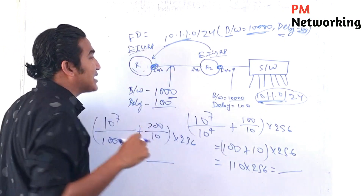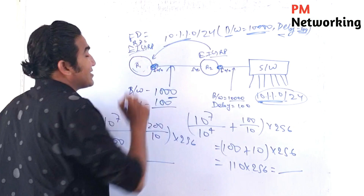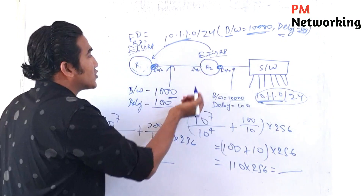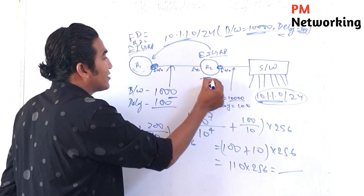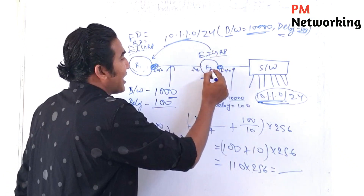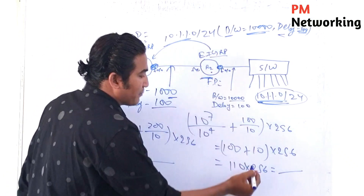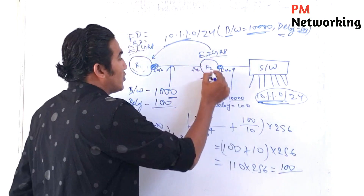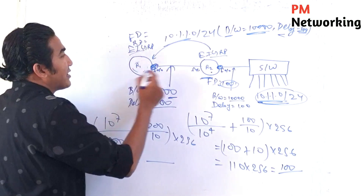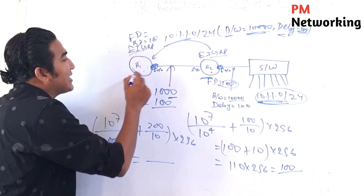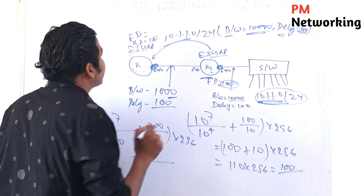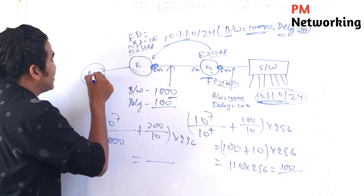What is RD for R1? RD is the distance from my neighbor to the destination. R1's neighbor is R2, so the distance from R2 to reach this network is R2's FD. Suppose the value we get for R2's FD is 100 — then R2's FD of 100 becomes the RD for R1. The FD of my neighbor becomes the RD for me.